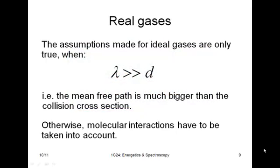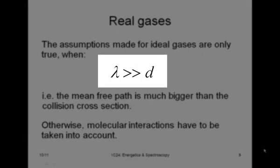When a gas can be considered ideal, it's when this condition exists. That is, when the mean free path is much bigger than the collision cross-section.